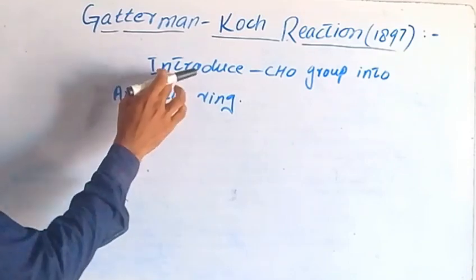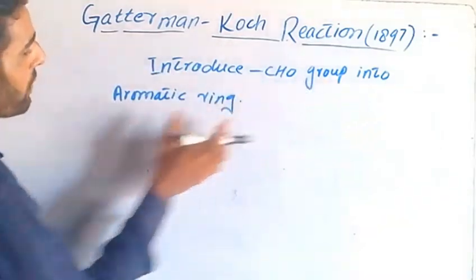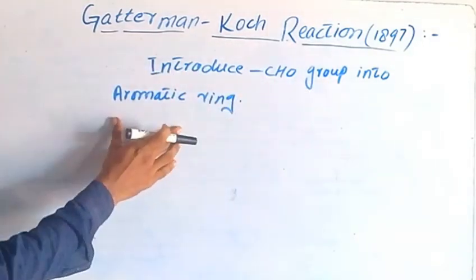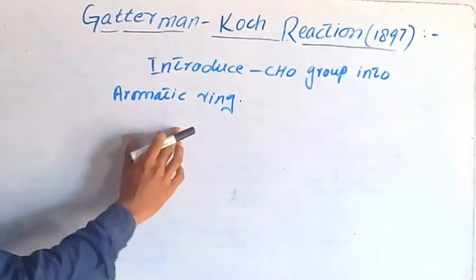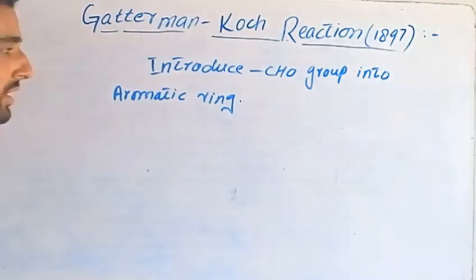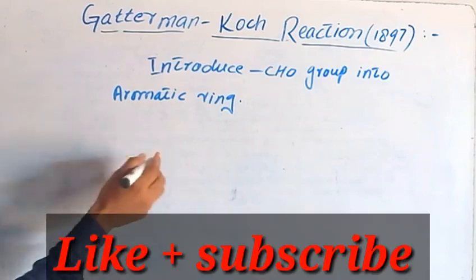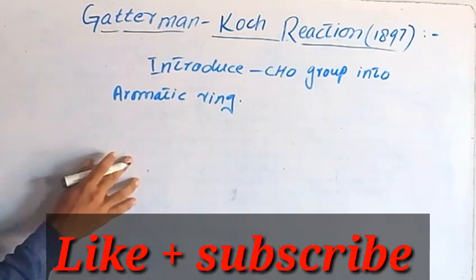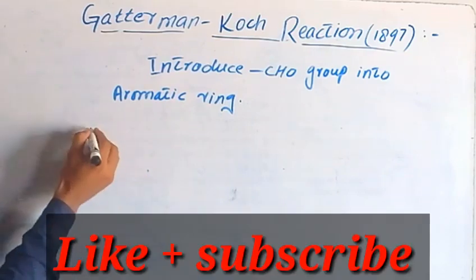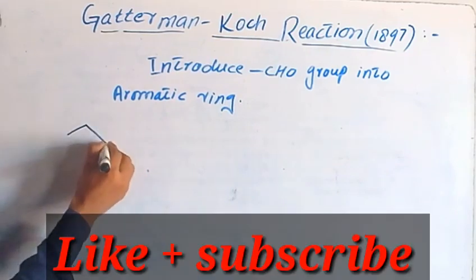Formylation — introduction of a CHO group into the aromatic ring — that is the formylation. First of all, what is the substrate? Benzene acts as the substrate.